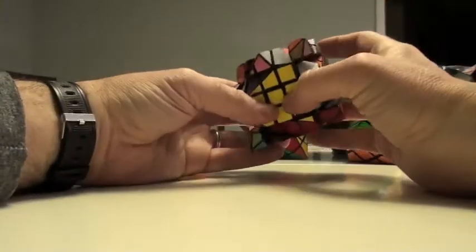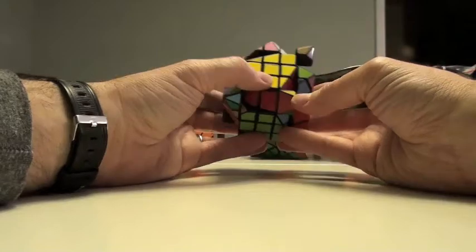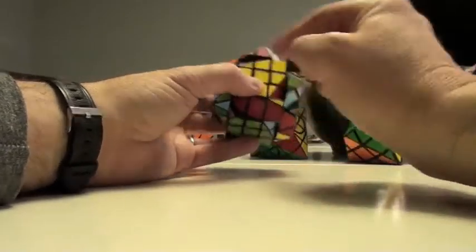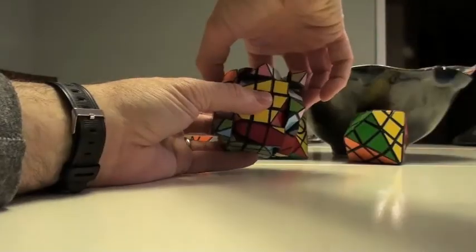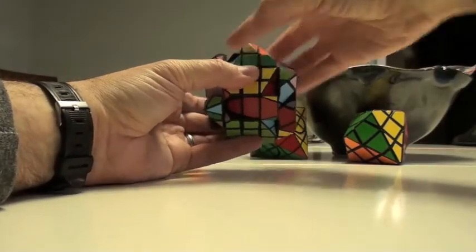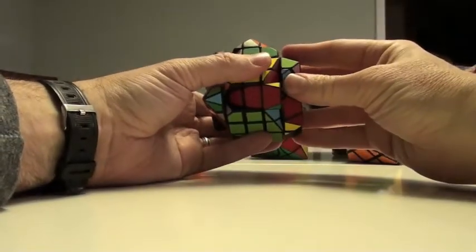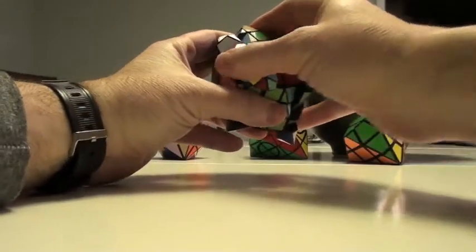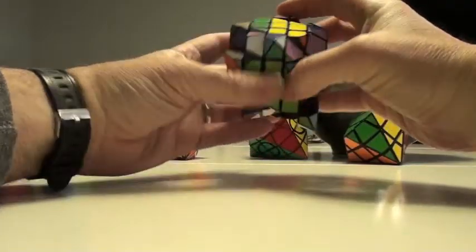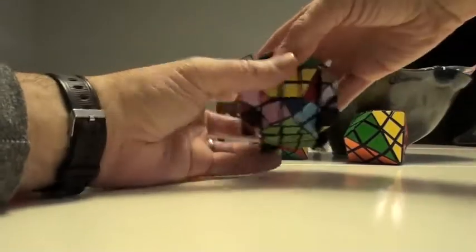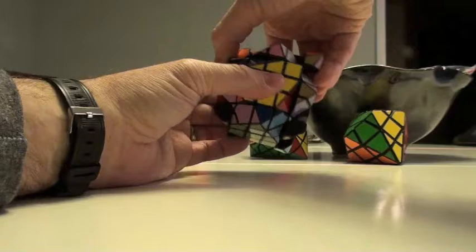And then we just keep going. Okay, so we're going to deal with these last two centers. Now what has to happen is this will come here, this will come here. So we're going to get a swapping of these two. That algorithm, as we move this across to the side here, then we do R F I U R I F and swing it back.